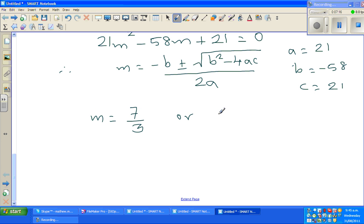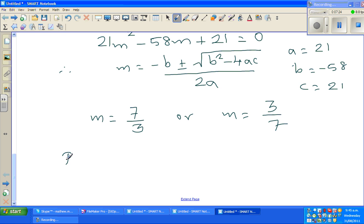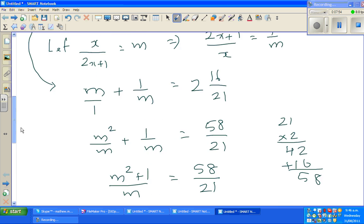But we don't want m, we want x. But m is x over 2x plus 1. So if m is 7 over 3, this implies x would be 3 over 7, and the reciprocal of this is 7 over 3. So your answer is x is 3 sevenths.